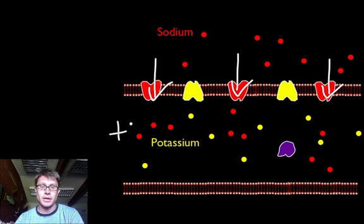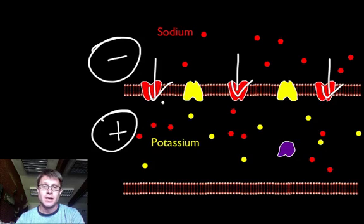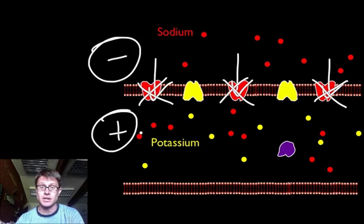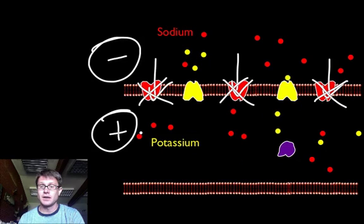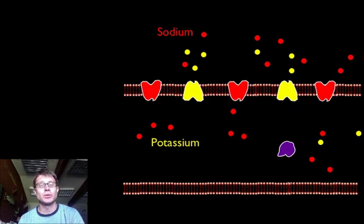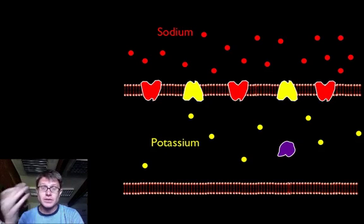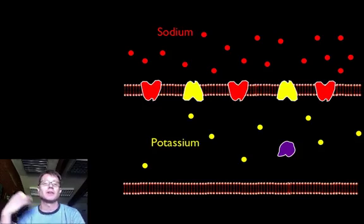Now we have a positive charge at the depolarized spot. The sodium channels then close up so sodium can't pass, but the potassium channels open up. With all the positive charge inside, potassium flows out, making our voltage become more negative again. We get back toward an equal charge on either side. Then we have to reestablish the gradient using the sodium-potassium pump. When you see light you're sending literally thousands of action potentials down a neuron, and between each one the sodium-potassium pump reestablishes the gradient.